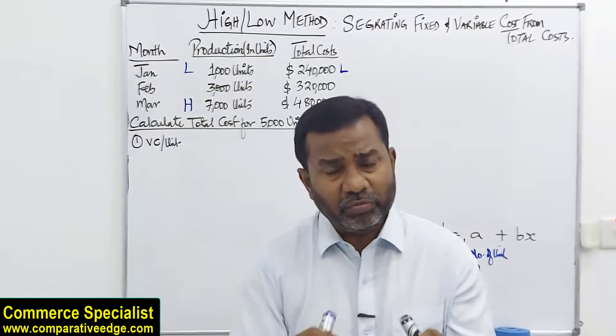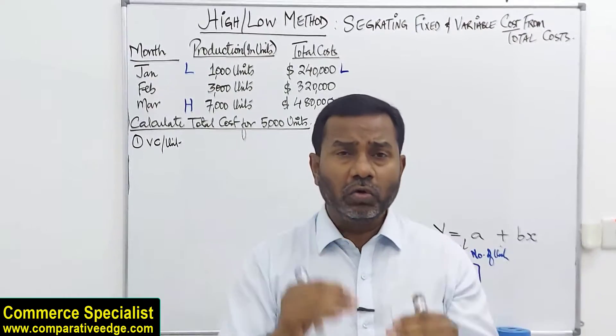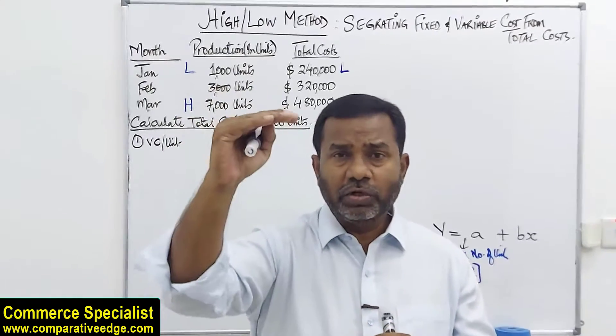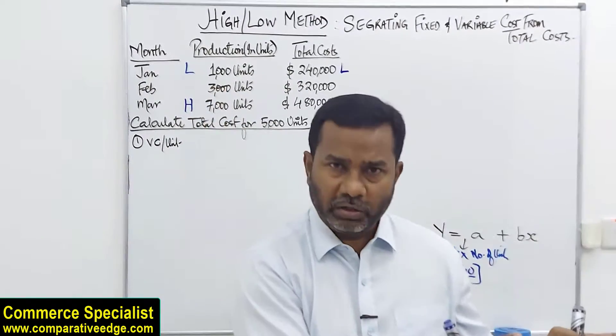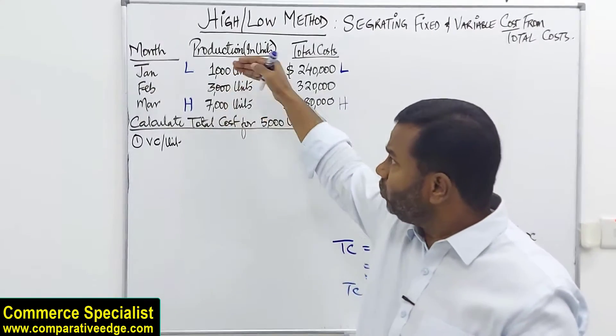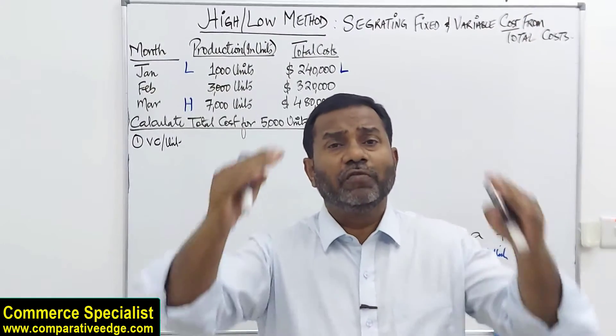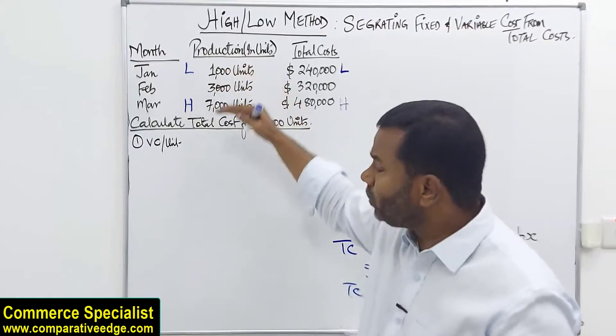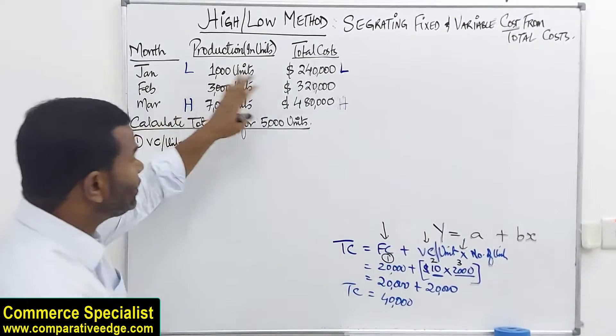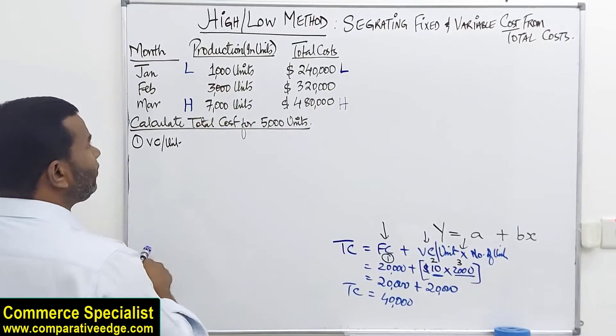Here a note of caution. Please remember whenever you are highlighting high and low, always start with the output, the units. Identify the lowest units, identify the highest unit then go to the corresponding cost. Another thing you need to remember is here I have arranged this 1, 3 and 7. When you are attempting an examination question, it could be haphazard. You have to arrange them from lowest to highest so that you know what is the lowest and what is the highest. Once high and low has been marked, I can calculate variable cost per unit. The formula is very simple. Please pay attention.